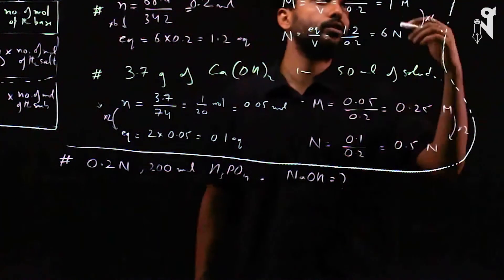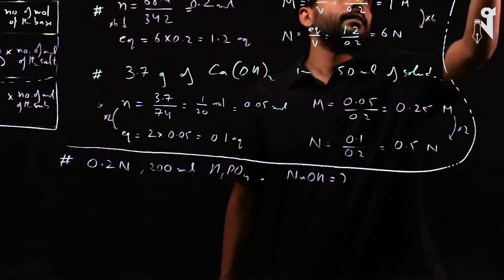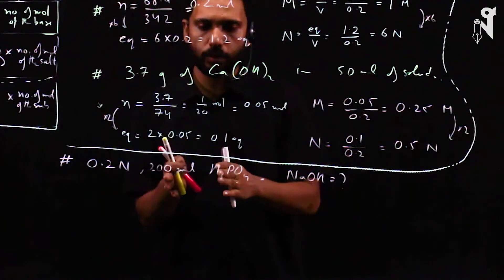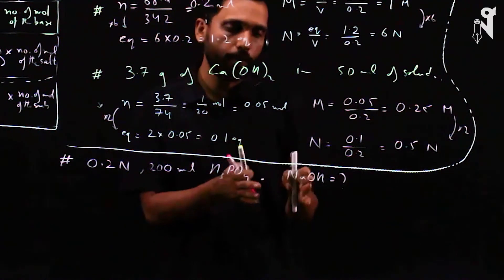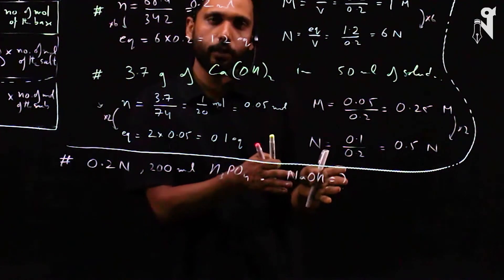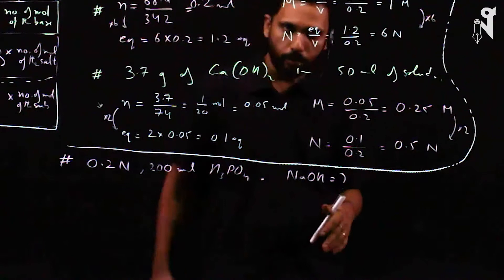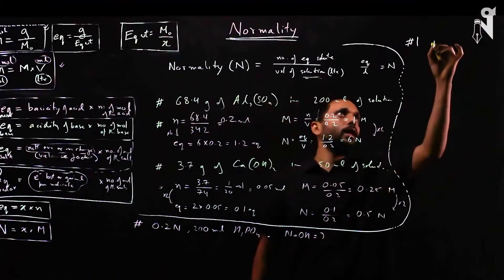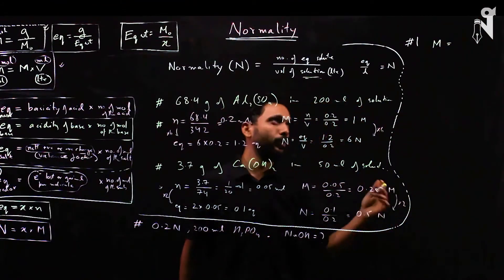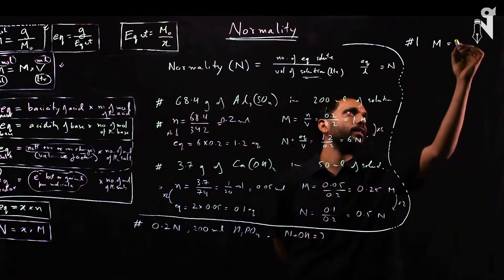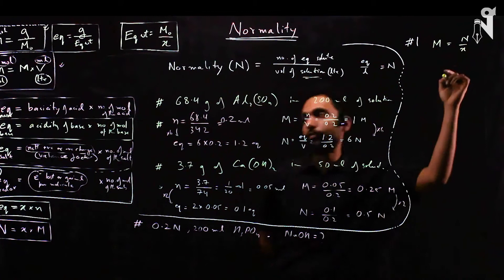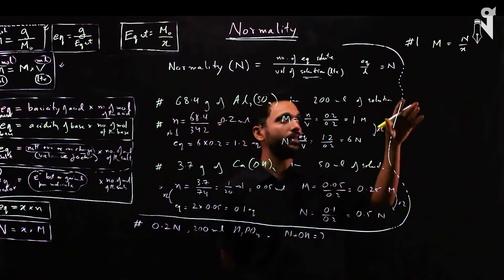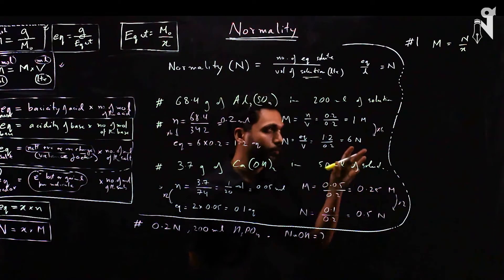Method 1: through moles. Find how many moles of acid we have, write a balanced chemical reaction, find the moles of NaOH required, then convert to grams by multiplying with the molar weight. Molarity = normality ÷ X factor. Note that molarity is always equal to or less than normality.